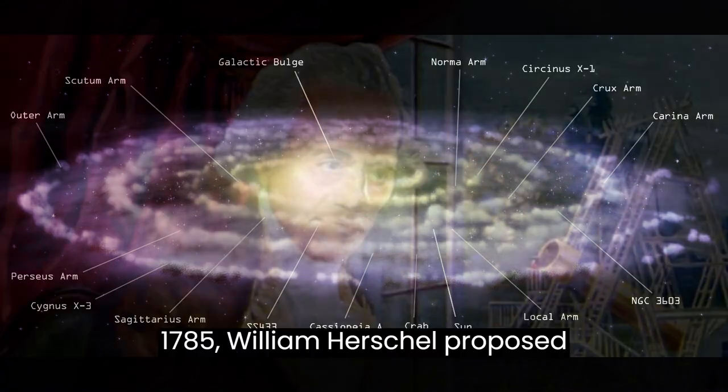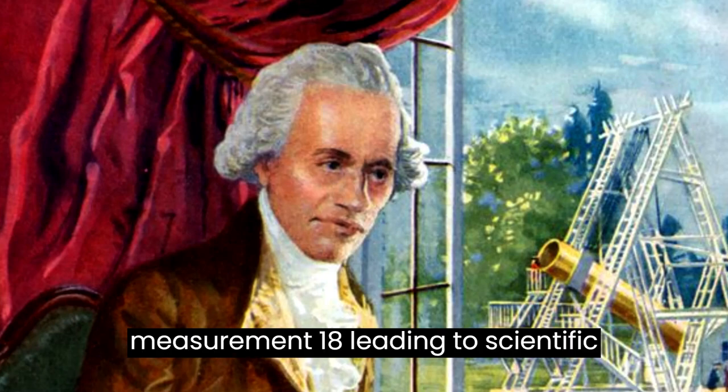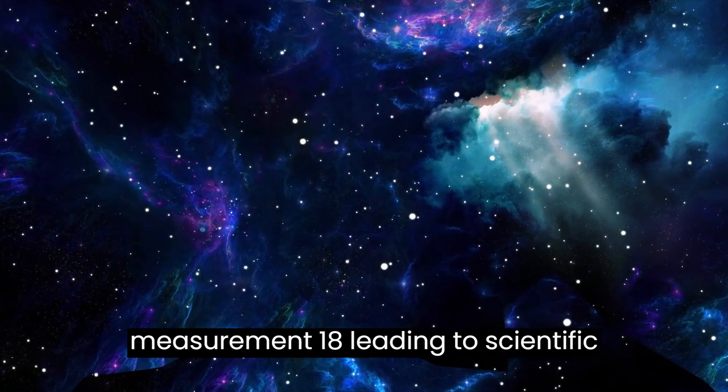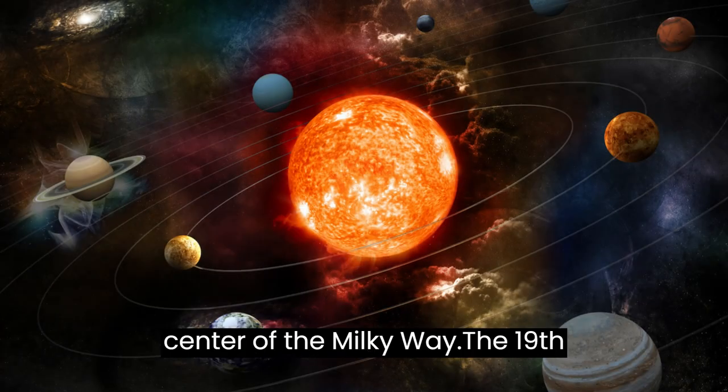In 1785, William Herschel proposed such a model based on observation and measurement, leading to scientific acceptance of galactocentrism, a form of heliocentrism with the sun at the center of the Milky Way.